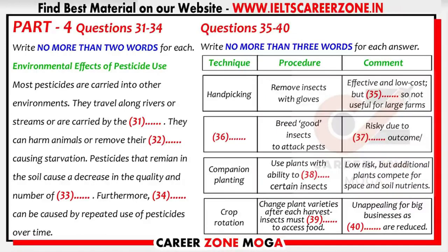Good evening. I'm here today to present the findings from our research into pesticides and alternatives to using them. I'd like to begin by talking about some of the environmental effects of pesticide use. As most of you will be aware, pesticides have proven to be very harmful to our environment. The principal reason for this is because nearly all pesticides travel beyond their target areas. This often happens when rain carries pesticides along water channels such as rivers, where they are then transported downstream. The wind also blows pesticides into wild areas where they are not wanted.